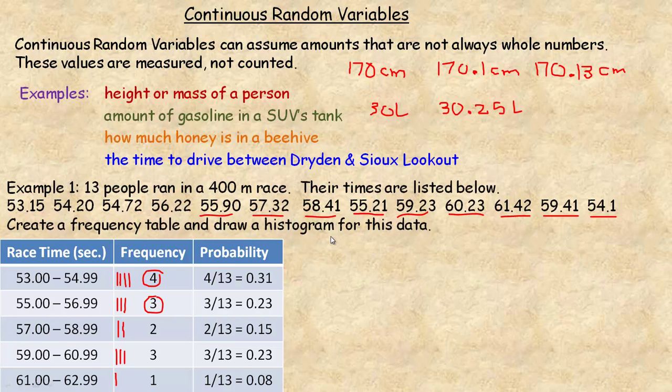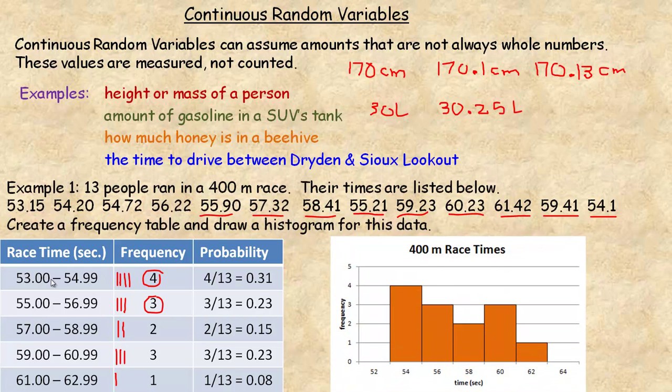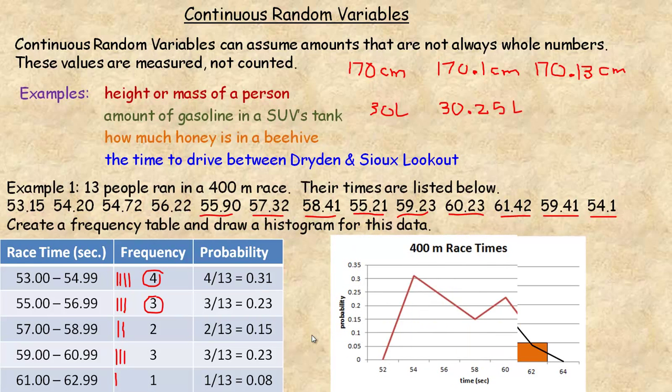It says also draw a histogram for this data. So this is what the histogram would look like. The center of each of these categories is 54, 56, 58, etc. So that's what's at the bottom, in the middle of each of these histogram bars. This would actually be 53, this would be 55. So that first bar that goes from 53 to 54.99 would be this one, and then this is the one that goes from 55 to 56.99, etc. The heights are the frequencies, 4, 3, 2, 3, and 1. And so that's what the frequency histogram looks like. If we join together the midpoints of all those bars, we get the frequency polygon. And if we change the scale here so it's not the frequency anymore, but instead the probabilities, then that frequency polygon becomes the probability density distribution.